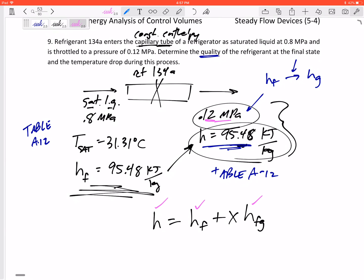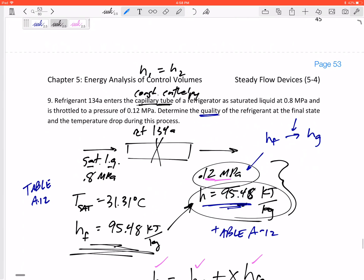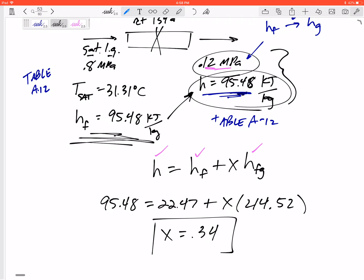So I know the h that I have, 95.48. I know the h_f for this 0.12 MPa, I know the h_fg for that 0.12 MPa. I can find the quality. So this is what I've got: 95.48 equals 22.47 from the table, plus also from the table 214.52, and I would get a quality of 0.34.